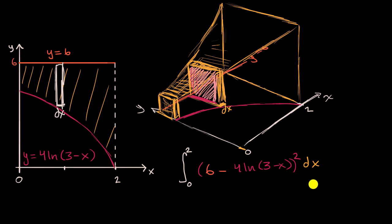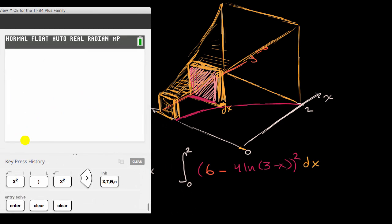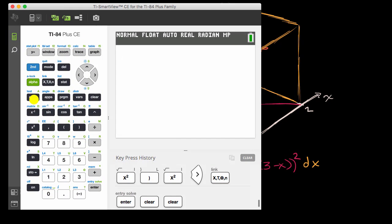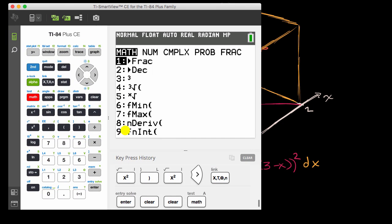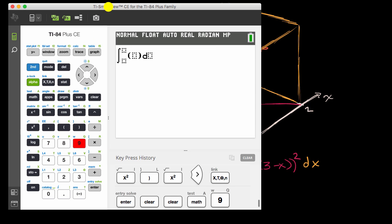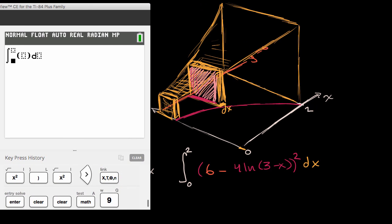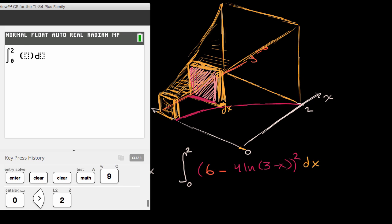And if you were to evaluate this integral, you would indeed get the volume of this kind of pedestal horn-looking thing. This is not an easy definite integral to evaluate by hand, but we can actually use a calculator for that. And so we can hit math, and then hit choice number nine for definite integral.